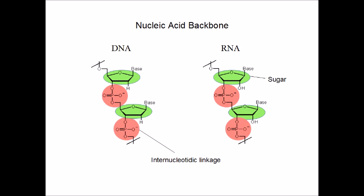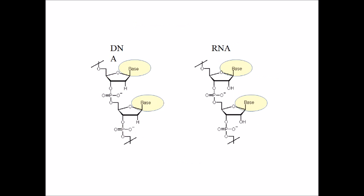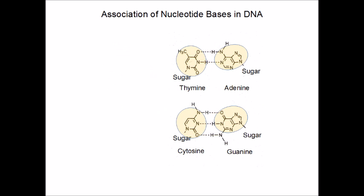The other components of the nucleic acids are the carbohydrates, which form together with the internucleotidic linkage the backbone. Finally, there are the nucleotide bases. They form, among each other, hydrogen bonding arrays as shown here in case of Watson-Crick base pairing.